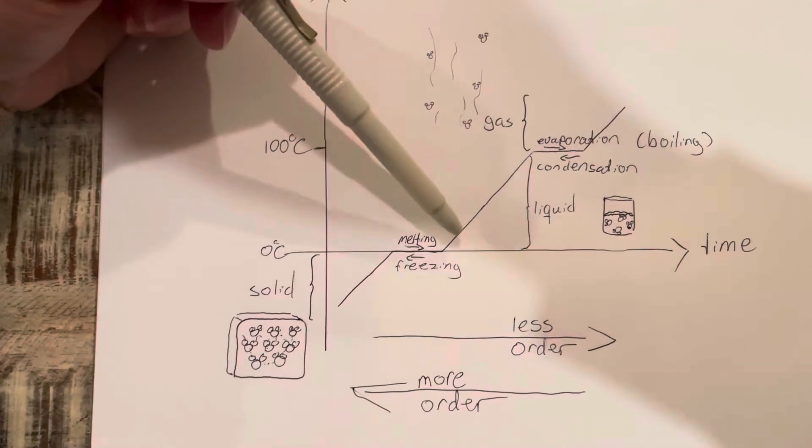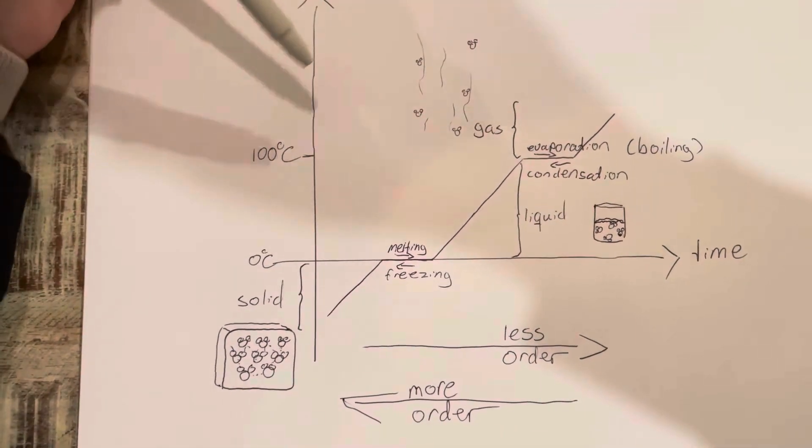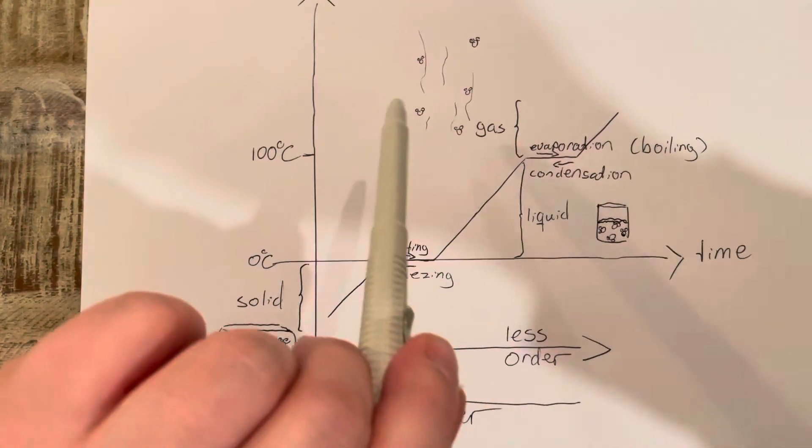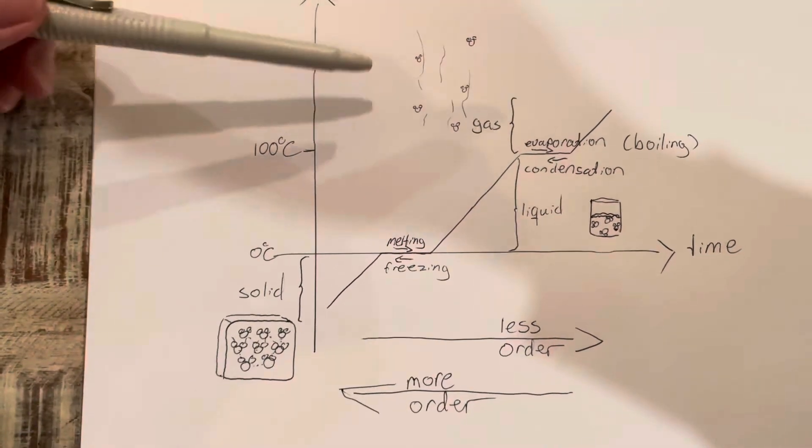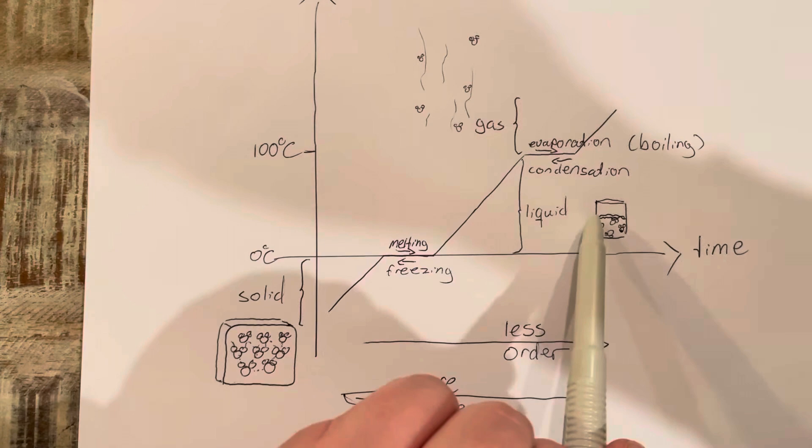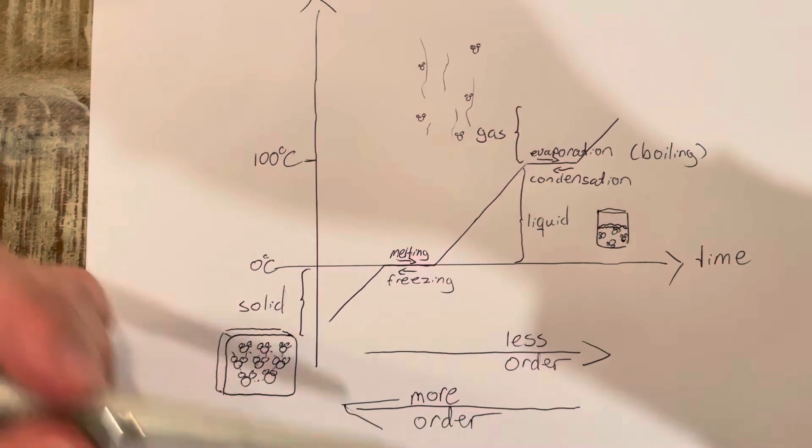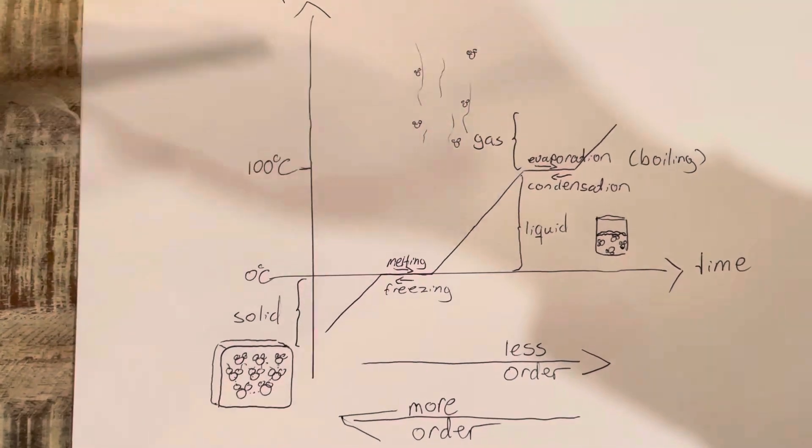The energy here is going to heat up the liquid, but as the curve flattens, the energy is going to change it from liquid to a gas. The energy is used to break these weak bonds between the molecules so they can break completely free and evaporate.